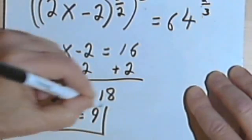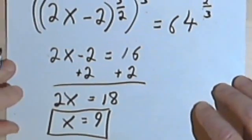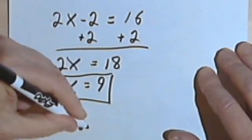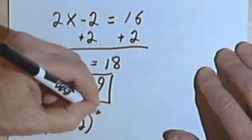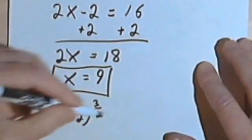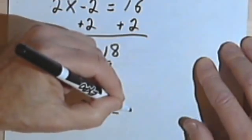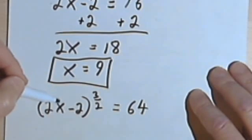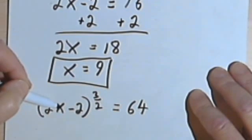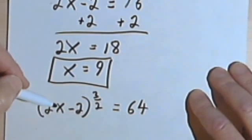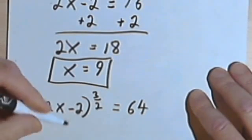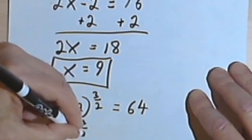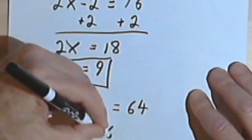Okay, so that should be my answer, but we know by now that we want to check the answer. So 2x minus 2 to the 3 halves power. And the question is, does that equal 64? Okay, well, if x is 9, that means I want 2 times 9 minus 2. 2 times 9 is 18. 18 minus 2 is 16. So I'm going to have 16 to the 3 halves power, and I want to see if that equals 64.